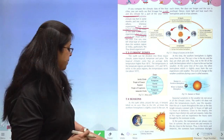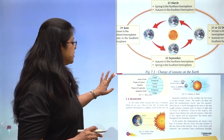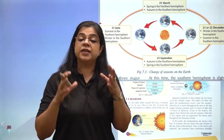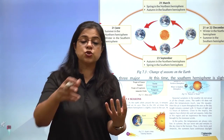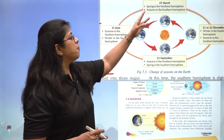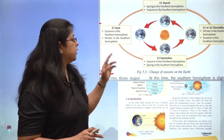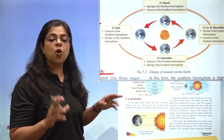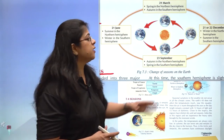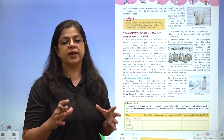These two movements of the Earth simultaneously cause changes in seasons, day and night. March is spring in the northern hemisphere and autumn in the southern hemisphere. June is summer in the northern hemisphere and winter in the southern hemisphere. Towards September, it becomes autumn in the northern hemisphere and spring in the southern hemisphere. In December, there is winter in the northern hemisphere and summer in the southern hemisphere. This is how the movement of Earth around the sun causes a variation in seasons.